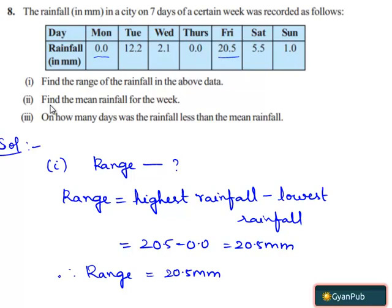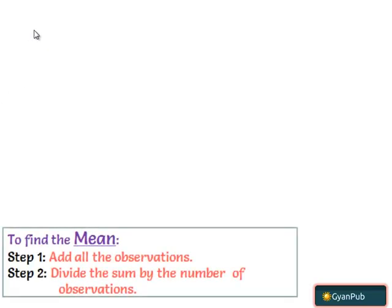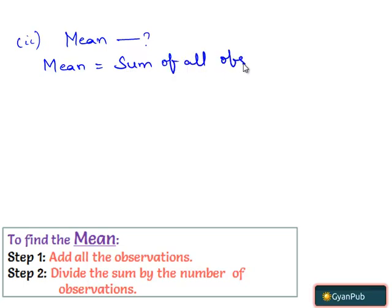Now let's move on to the second part. In the second part, they have asked us to find the mean rainfall for the week. Here they have asked us to find out the mean. Mean can be obtained by dividing the sum of all the observations by number of observations.